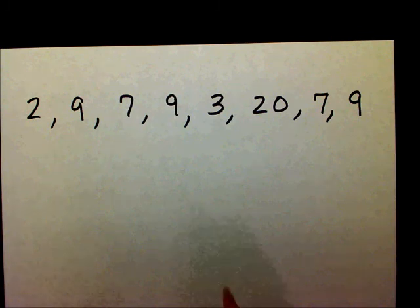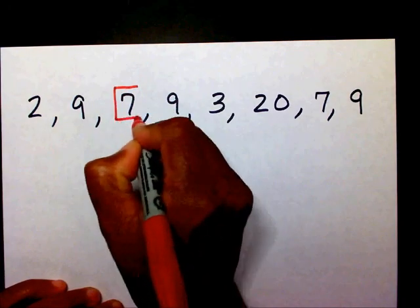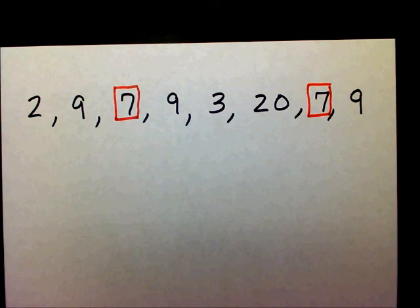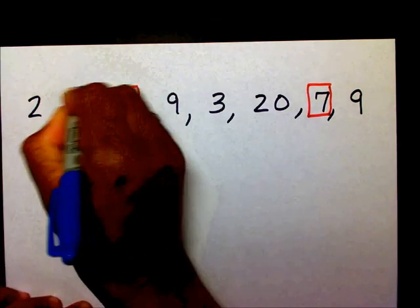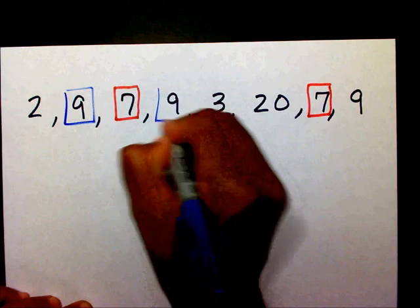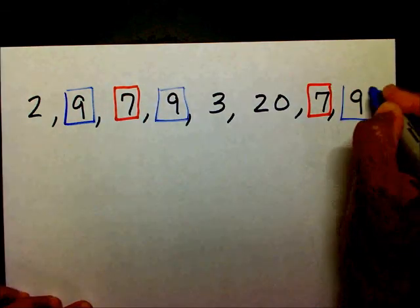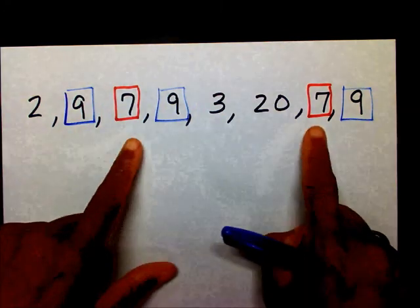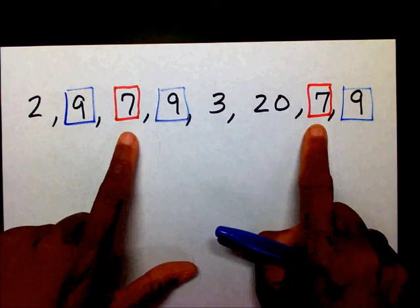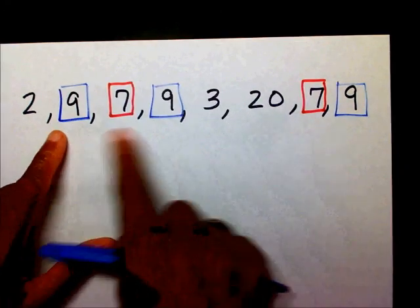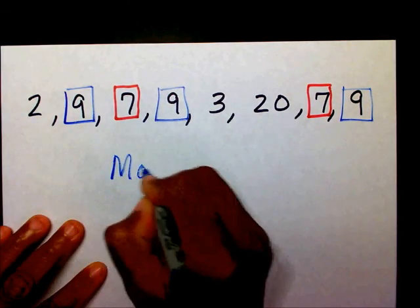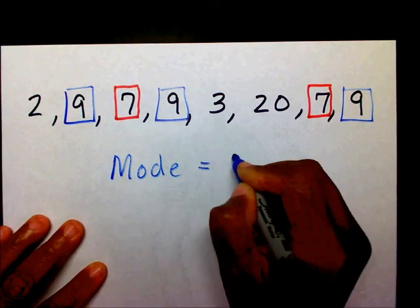I see 7 here and I see 7 here, but I also see 9 here, 9 here, and 9 here. So therefore, I only see two 7's, but I see three 9's, so therefore my mode equals 9.